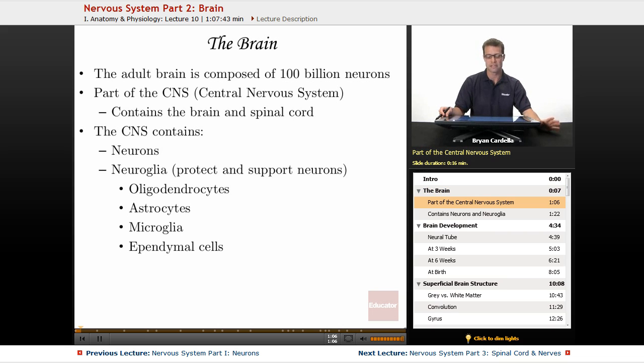The brain is part of the central nervous system, abbreviated as the CNS. The central nervous system, unlike the peripheral nervous system, contains the brain and spinal cord. It's literally central: brain, spinal cord going down your back in the middle.